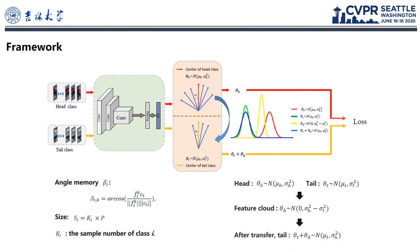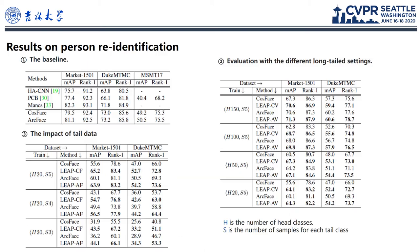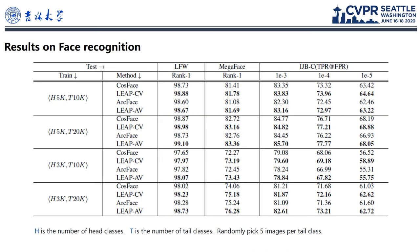This is the framework. The Feature Cloud can be combined with cosine face and arc face. Experimental results confirm that the Feature Cloud achieves competitive performance on long-tailed person re-identification and face recognition.